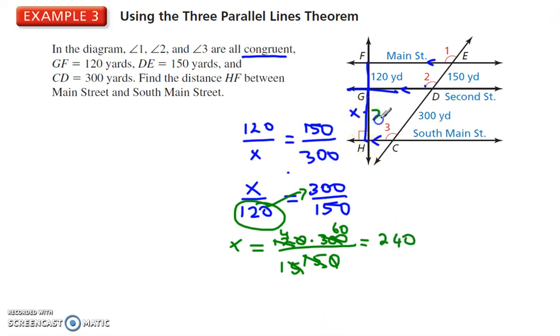So, this segment right here is 240. Now, you could have also seen that saying 150 and 300. 300 is double of 150, and so this has to be double right here. But they're not asking for what is this length. They're being tricky, and saying what's the distance from H to F.